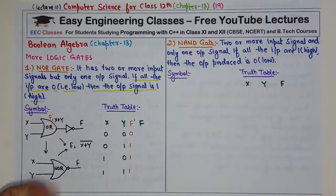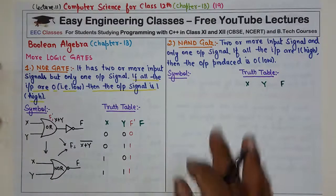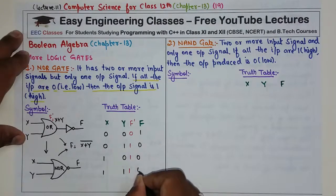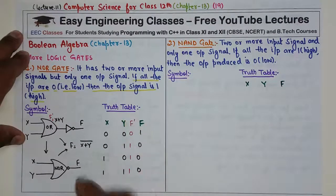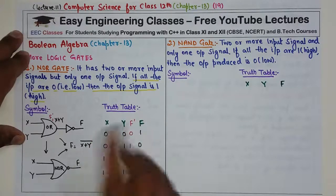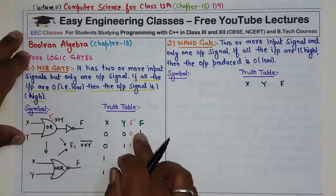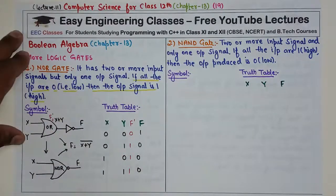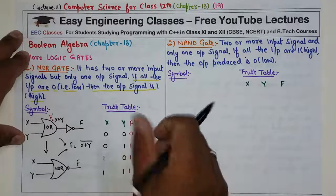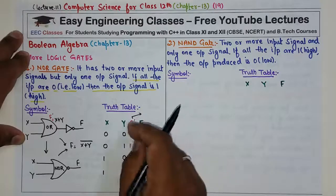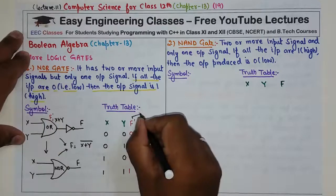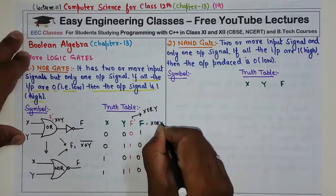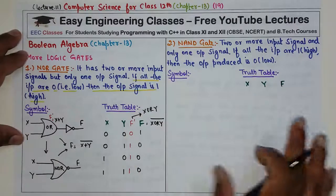F dash ko ek NOT gate se pass kiya — simply aapka inverse ho jayega. Toh zero ki jagah one, baaki sab ki jagah zero. So jab dono input zero hain, output one hai; otherwise output zero hai — yehi NOR gate ki definition kehti hai. F dash is x plus y, and f is x plus y ka bar. So this is about the NOR gate.